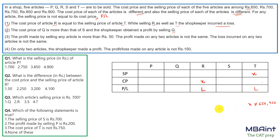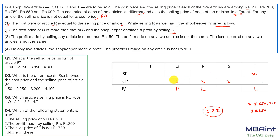The second clue: cost price of Q (call it y) is greater than cost price of S (call it z), so y > z. Selling Q gives a profit. From this, y cannot be 650 because y must be greater than z, so y cannot take the least value. Also y cannot be 900, because if y is 900 any selling price would be less than 900 — the maximum — and profit would not be possible.